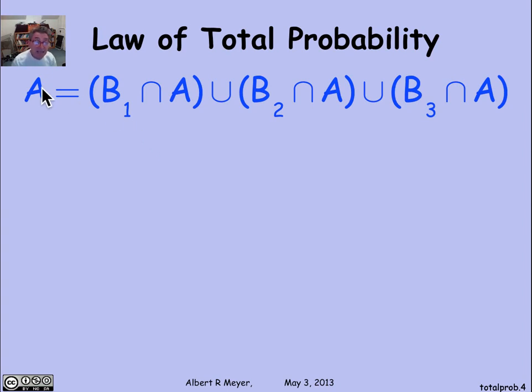Then any set A is equal to the union of the part of A that's in B1, the part of A that's in B2, the part of A that's in B3.